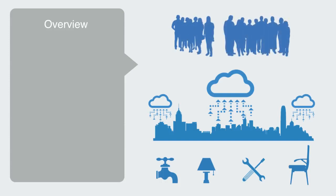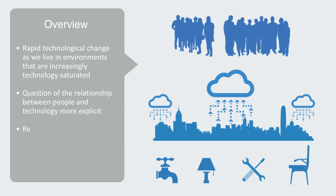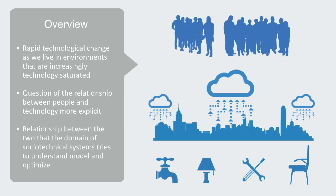Today, the information revolution is driving rapid technological change. As we live in environments that are increasingly technology-saturated, it makes the question of the relationship between people and technology more explicit than ever. And it is this relationship between the two that the domain of socio-technical systems tries to understand, model, and optimize.